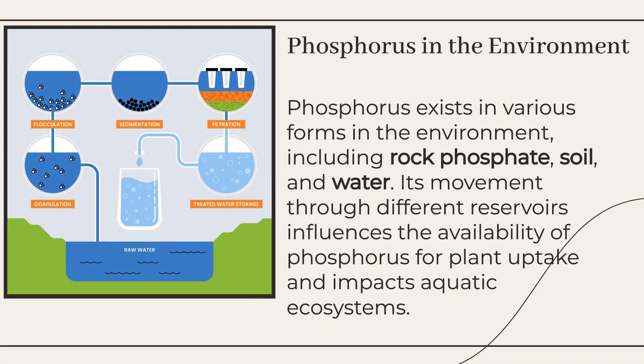Phosphorus in the Environment. Phosphorus exists in various forms in the environment, including rock phosphate, soil, and water. Its movement through different reservoirs influences the availability of phosphorus for plant uptake and impacts aquatic ecosystems.